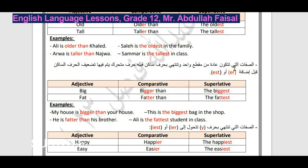ملاحظة مهمة: الصفات التي تكون من مقطع واحد وتنتهي بحرف ساكن وقبله حرف متحرك - عادةً يتم تضعيف الحرف الساكن قبل إضافة ER أو EST. مثلاً: big - تنتهي بحرف ساكن G وقبله حرف متحرك I، إذن double G: bigger than, the biggest. ونفس الشيء: fat → fatter than, the fattest.